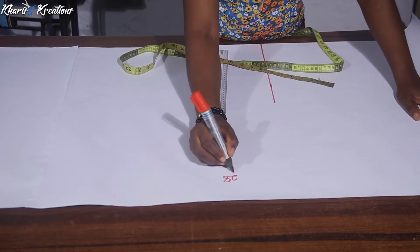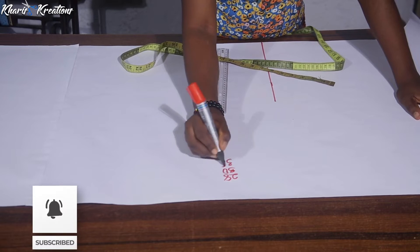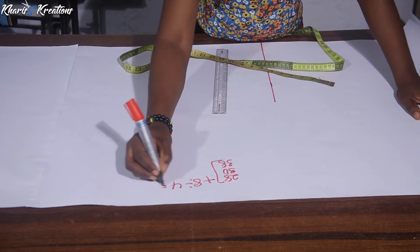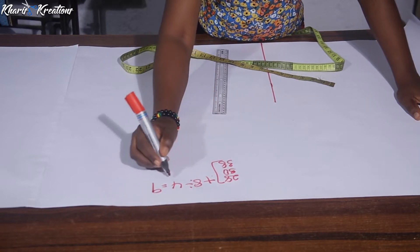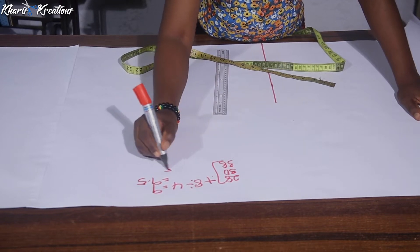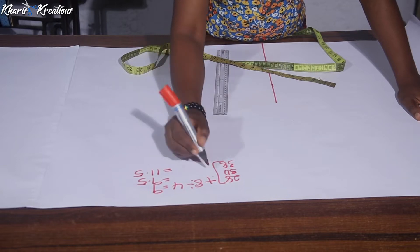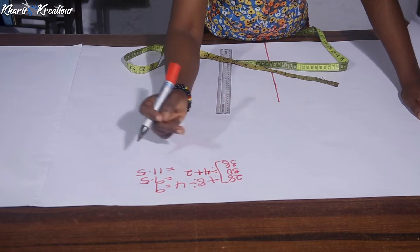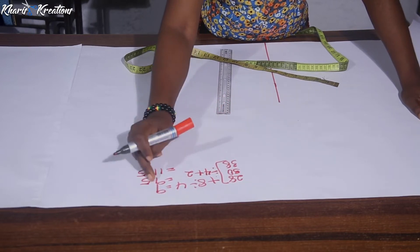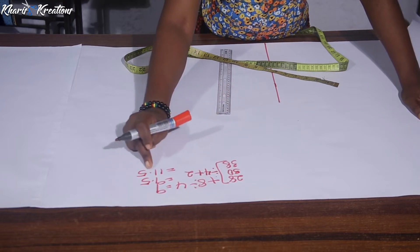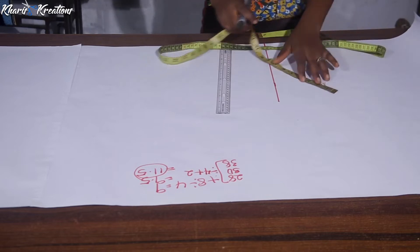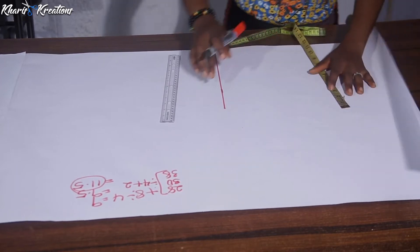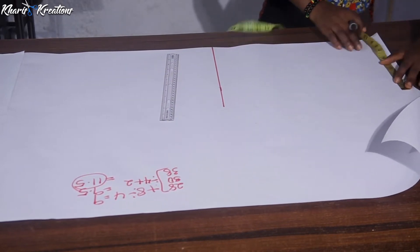Now the circumference measurements: I have the underarm circumference 28, the waist 30, and the hip circumference is 38 inches. For my circumference measurements, add 8 and divide the sum by 4. Adding 8 inches to all circumference measurements and dividing by 4 is the same as dividing by 4 plus 2. So we have 11.5 inches as the highest circumference measurement. First I'm going to measure the underarm circumference which is 9 inches.